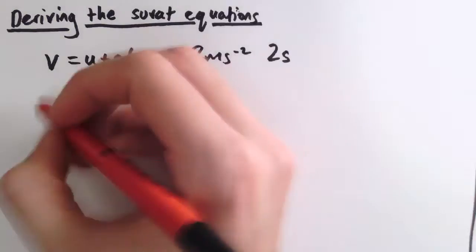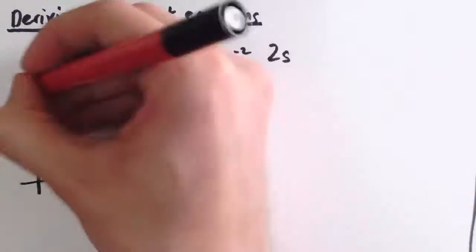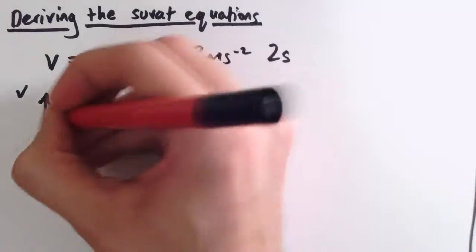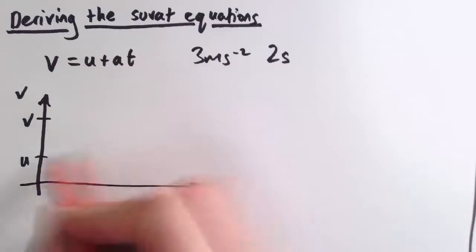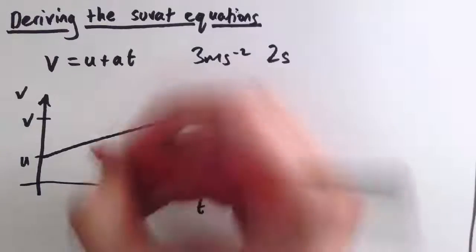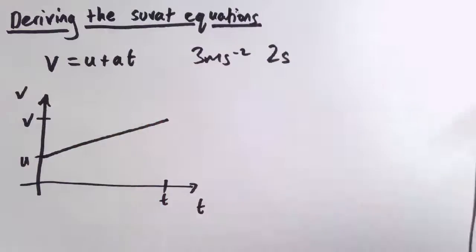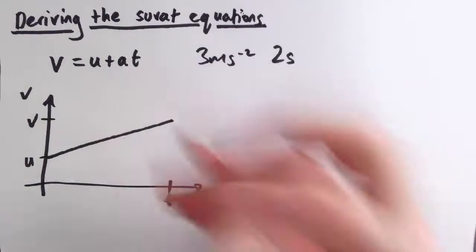And just thinking about that in terms of a velocity time graph, so if we have velocity on this axis and time on this one, then if we start at a particular velocity u and end at a velocity v for a certain period of time, so up to t, then a, the acceleration, is the gradient of this graph. It tells you how steeply or how fast the velocity is increasing.